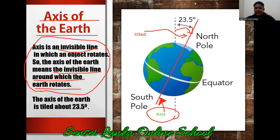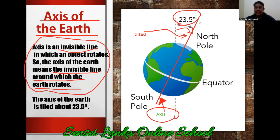23.5 degrees. The earth is tilted 23.5 degrees. Can you see it here in the picture? The earth has an axis — it is an imaginary line, and it is tilted at 23.5 degrees. So this is the axis.